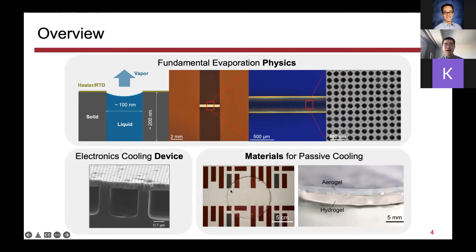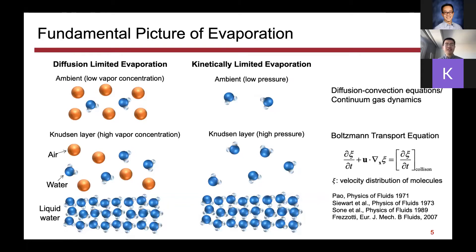With that in mind, I'd like to jump right into the evaporation physics part and make a distinction between two types of evaporation. The first one is diffusion-limited evaporation; the second one is kinetic-limited evaporation. You may think we have understood everything about evaporation already, but I'll try to explain to what extent this is true. Diffusion-limited evaporation occurs when you have, for example, a pool of water in air, and close to the water-gas interface you have a higher vapor concentration, while far away you have a lower concentration. The total gas pressure is maintained as constant throughout the vapor phase, so the flow of evaporation is purely driven by this concentration gradient.